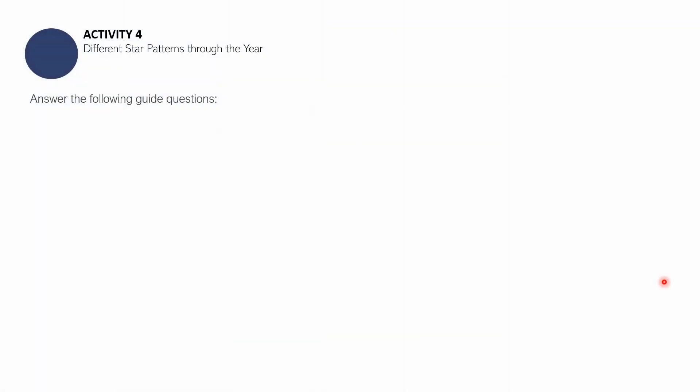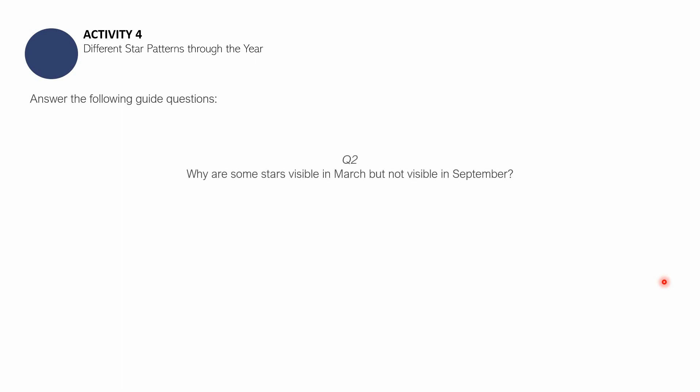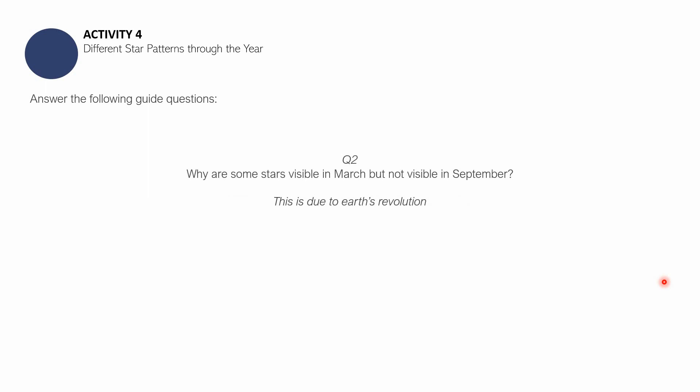For the guide questions: first question — compare the photographs, what did you notice? For the second and last question — why are some stars visible in March but not visible in September? Finalize your answers; if you are not done you can pause this video. The answer to the first question is that different patterns are formed in different months — there are different constellations present above a particular area for different months.